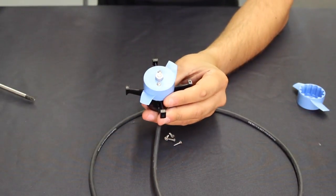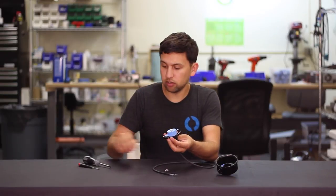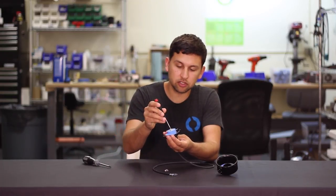Inside you'll see two screws holding the propeller onto the rotor inside. I'm going to remove those two screws with the hex driver.